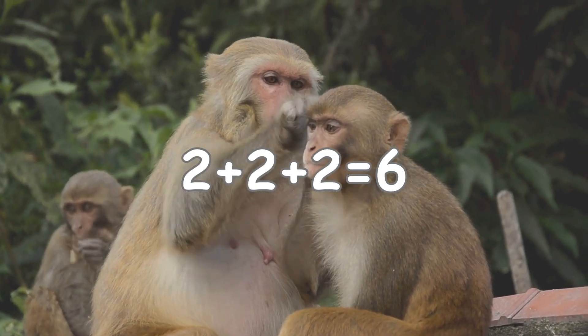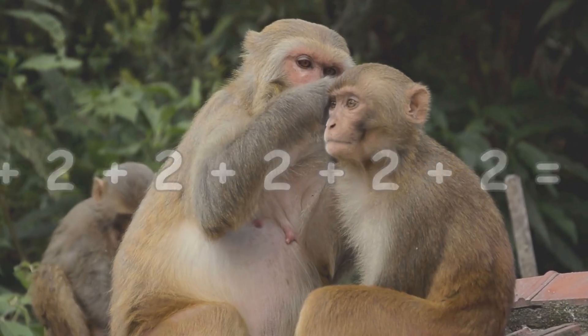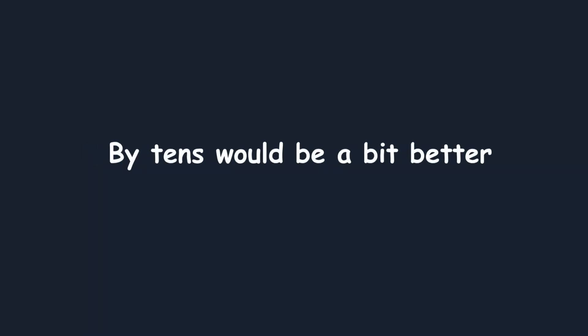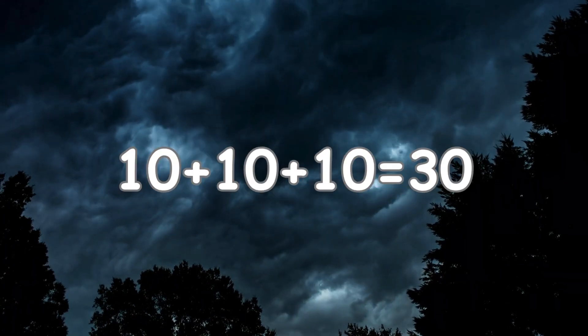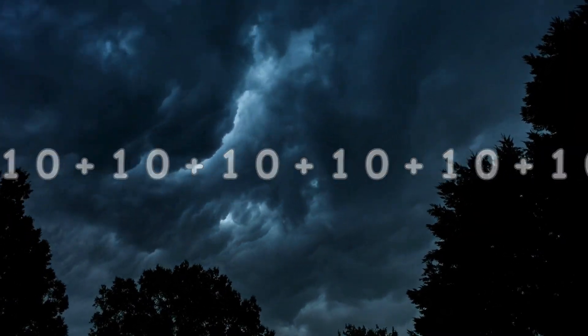Counting by twos: 2, 4, 6, 8, 10, 12... or by tens would be a bit better: 10, 20, 30, 40, 50, 60, 70.